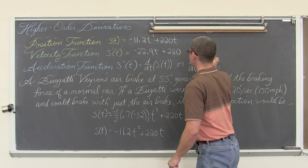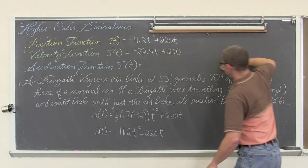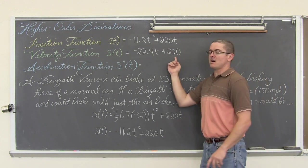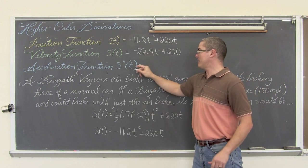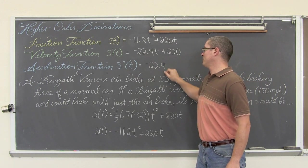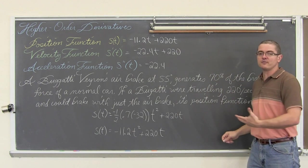Then if I take this function and I find the derivative again, then we get... this is a constant so the derivative of a constant is zero. So this is just going to be s double prime of t is equal to negative 22.4. So our acceleration function is a constant function.